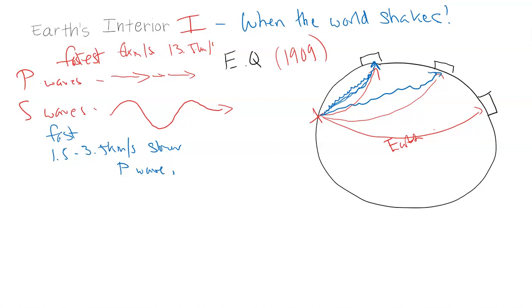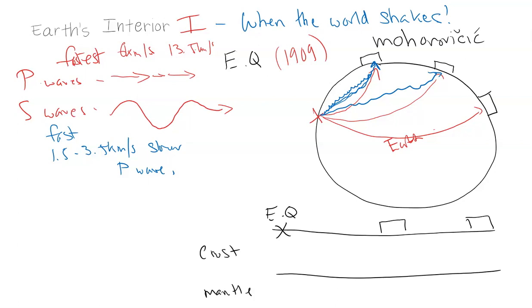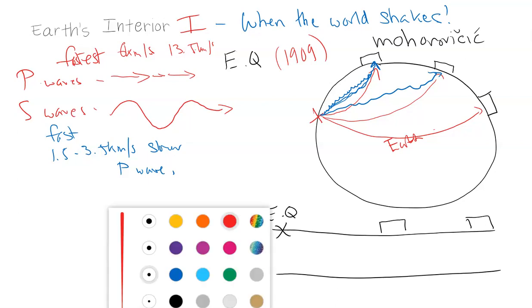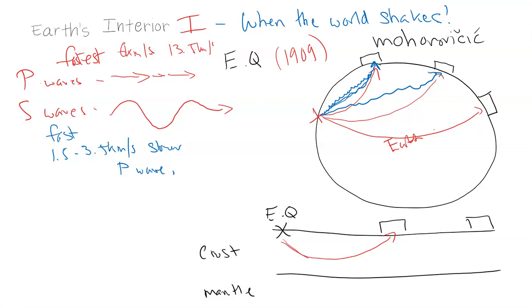These scientists in the early 20th century used these waves to figure out our Earth's interior. Let's start at the first scientist that made the first discovery. It was 1909, and it was a Croatian scientist by the name of Mohorovičić. He basically saw that if this was the crust, and the earthquake happened here, here's the epicenter, and here are the seismic stations, and here is the mantle that we now know of.